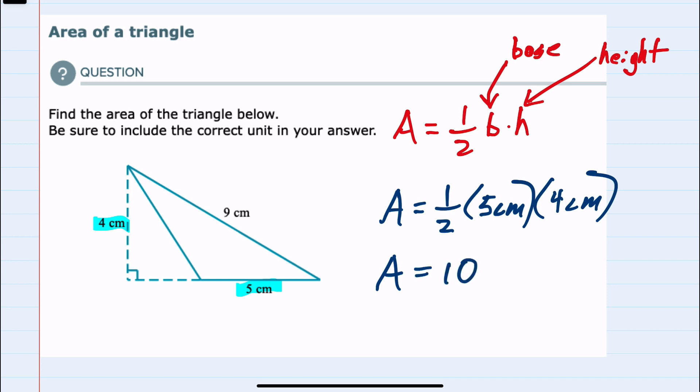And for units, we have centimeters times centimeters, so that will give us centimeters squared, and that's what we would expect. Since we're looking for area, we would expect square units, so our area is ten centimeters squared.